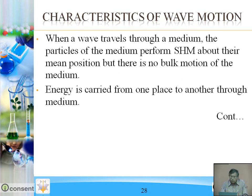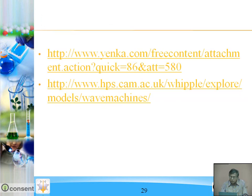Conditions of wave motion: there must be a restoring force which tends to bring the body to its original position — that is, elasticity of the medium. The medium must have inertia due to which the body moves beyond the mean position. And the friction must not be too large — friction must be minimum.